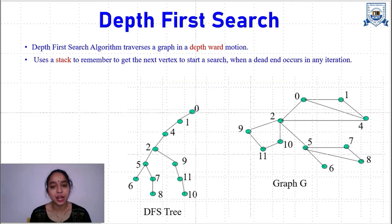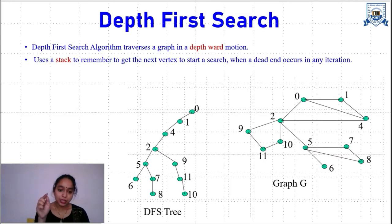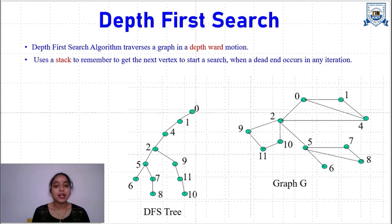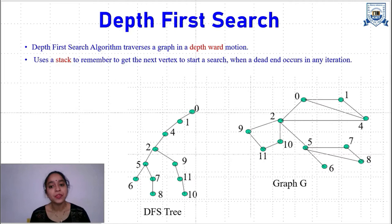Now we will be studying our first graph traversal technique: Depth First Search. As the term says, in DFS the traversing of a graph is done in a depth-first motion. From a particular vertex we are visiting all the vertices by going into the depth of that vertex, then into the depth of the current vertex — like this we traverse each and every vertex. To remember which vertex we have to go to in depth, we use a stack data structure. Stack is used to remember to get to the next node to start the search when we reach a dead end in any iteration.